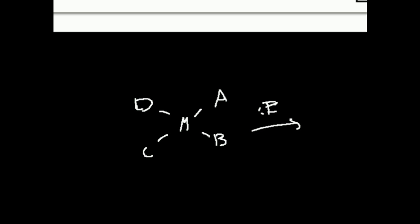What if C has the highest trans effect? Then A will get displaced by E. What if D had the highest trans effect? Then B is going to get displaced and E will go here.